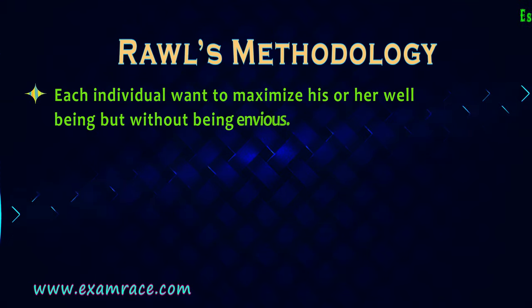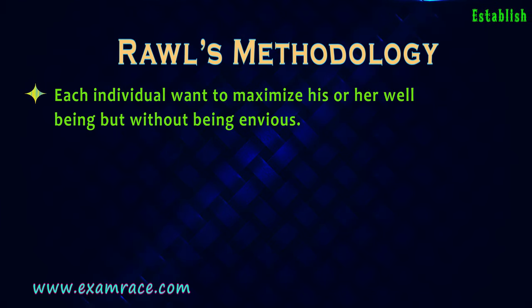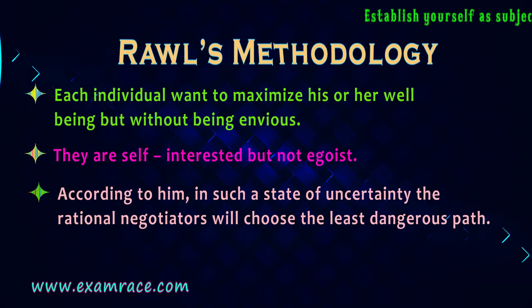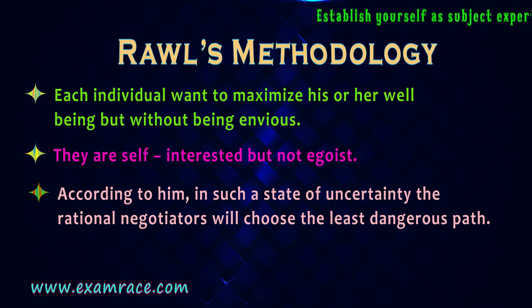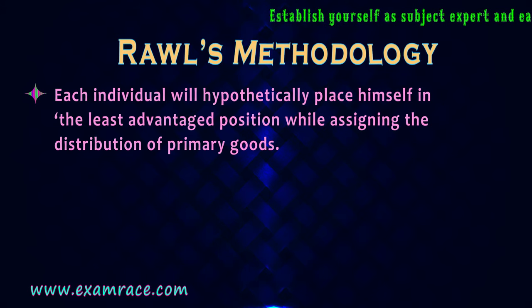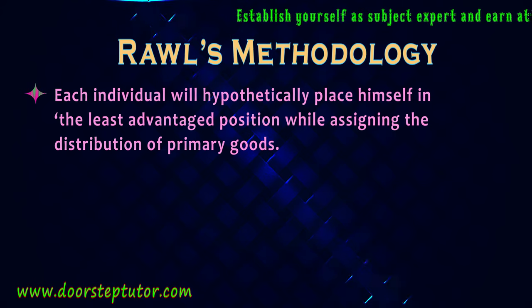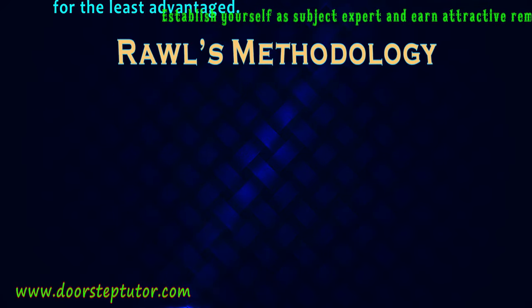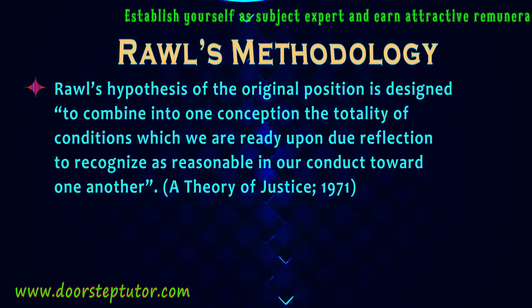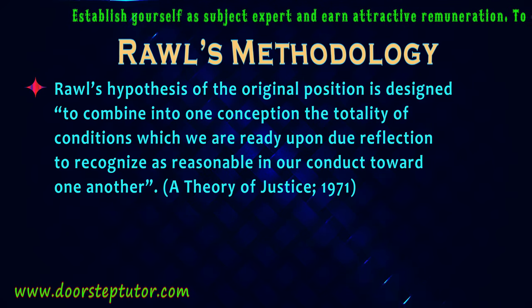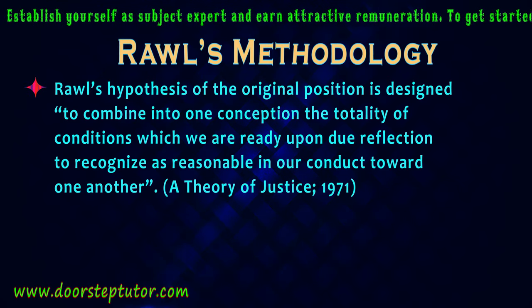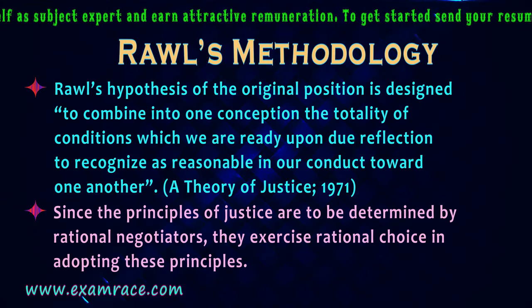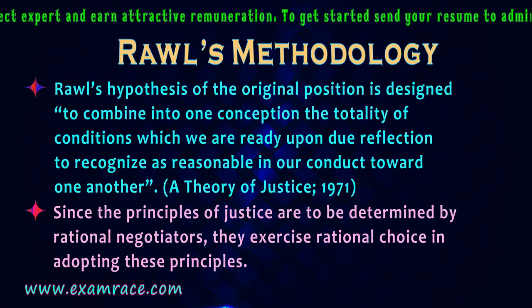Each individual wants to maximize his or her well-being, but without being advised. They are self-interested, but they are not egoist. According to Rawls, in such a state of uncertainty, the rational negotiator will choose the least dangerous path. Each individual will hypothetically place himself in the least advantaged position while assigning the distribution of primary goods, and hence each of them will demand the greatest benefit for the least advantaged. Rawls' hypothesis of the original position is designed to combine into one conception the totality of conditions which we recognize as reasonable in our conduct toward one another. These principles of justice are determined by rational negotiators exercising rational choice.